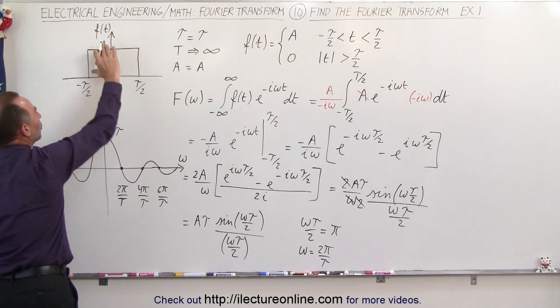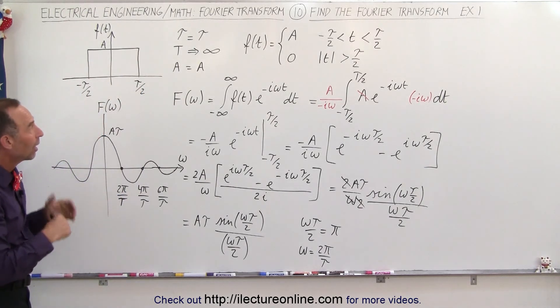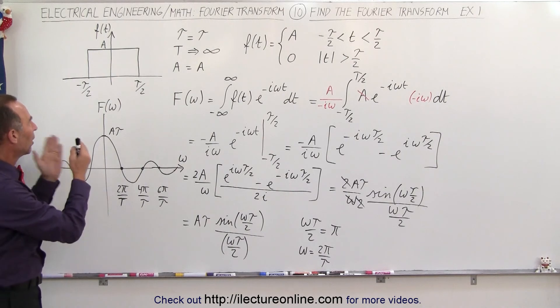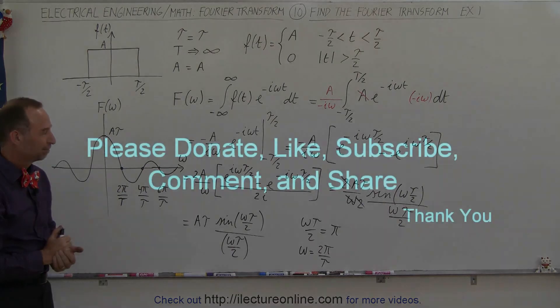And so this is the transform function, the Fourier transform of my initial single pulse input with amplitude A and width tau. And so there's a nice little example of how to find the Fourier transform of a single pulse like that, and that's how it's done.